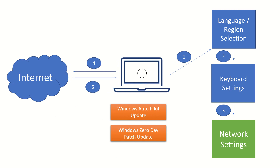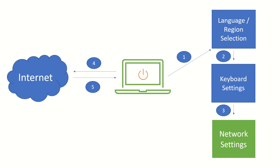When the machine makes its request to the endpoints, if a valid Autopilot profile, Autopilot update, and Windows Zero Day patch are available, the machine will install both updates. Since the Zero Day patch change happens at the OS level, the machine will require a restart. After the restart, the machine already knows which endpoint manager instance to contact — because the hardware ID and hardware hash of this machine were uploaded to the endpoint manager of the tenant.